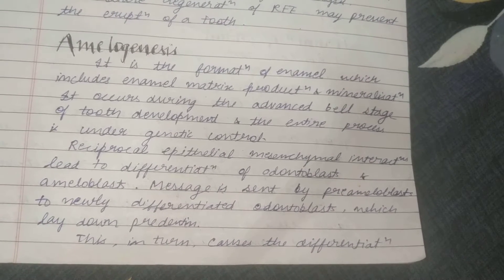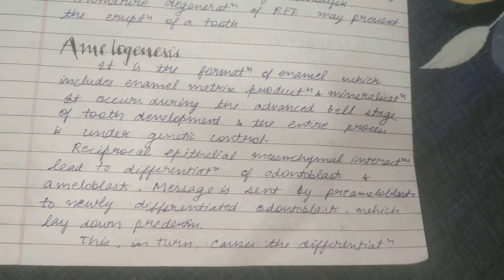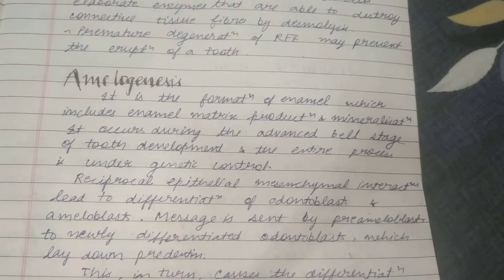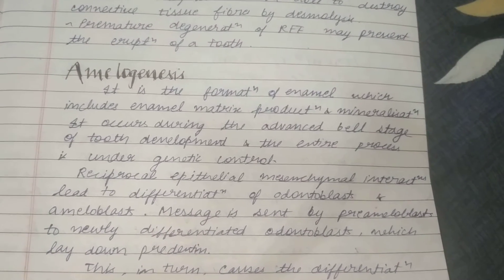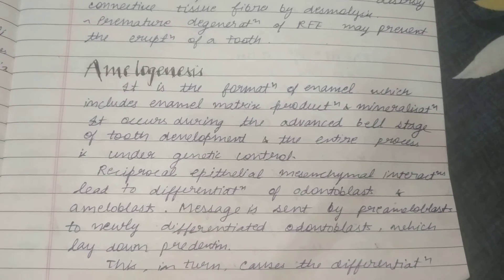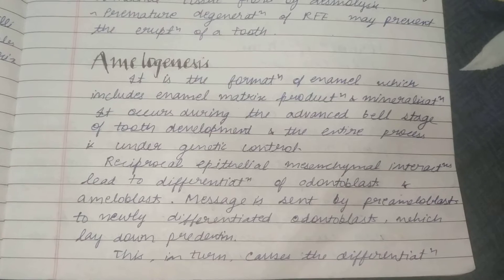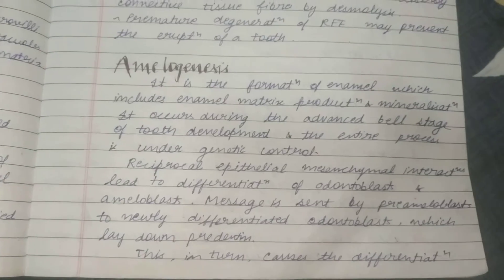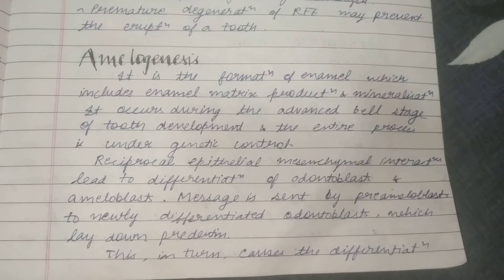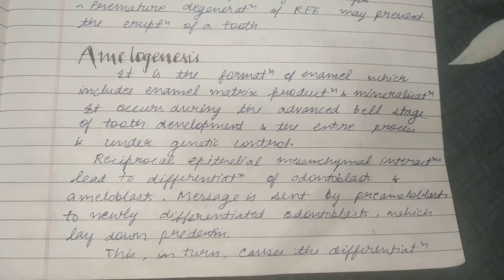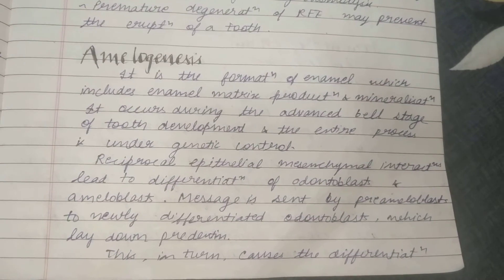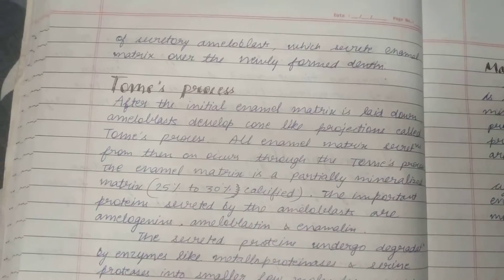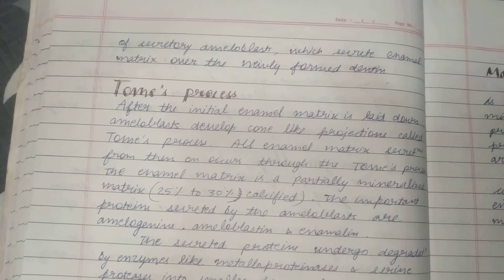There is mesenchymal interaction by which the odontoblasts form dentine. The first layer of dentine is formed, which further gives a signal to ameloblasts to form the enamel. The message is sent by pre-ameloblasts to newly differentiated odontoblasts, which lay down the pre-dentine. This in turn causes the differentiation of secretory ameloblasts, which secrete the enamel matrix over the newly formed dentine.